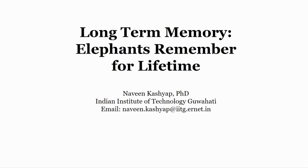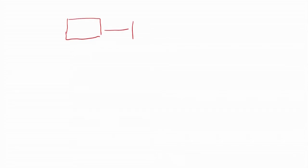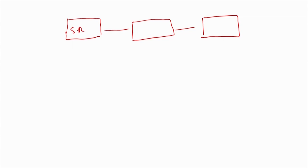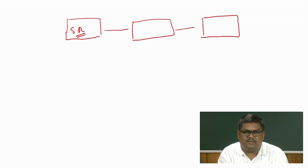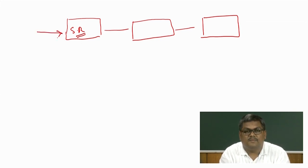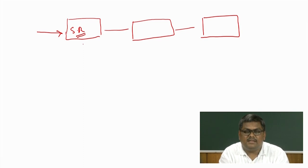Continuing from the last class, I discussed something called Atkinson and Shiffrin's model. This information processing model talks about a three-part system. What we have is a setup with something called the sensory register. In the last series of lectures, we saw what the sensory register is, how it works, and its various properties. Basically, any information which comes in and gets processed through the perceptual and attentional processes arrives at the sensory register. It has huge capacity but a very short duration.